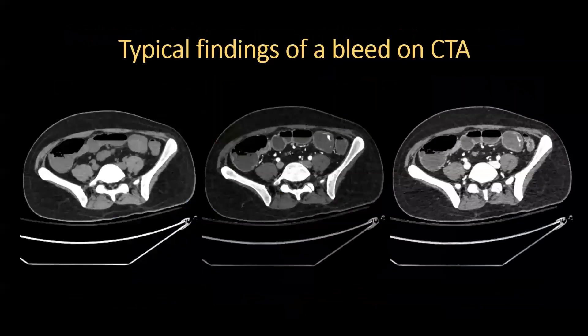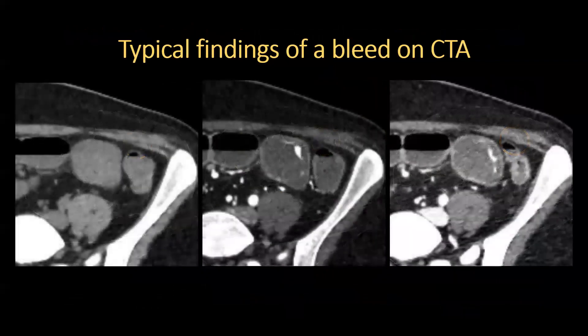Now we'll go into some case examples. Typical findings of an active bleed on CTA are an arterial blush of contrast, absent on non-contrast images, that pools and changes shape on the delayed phase. This seems straightforward, but as we will see in subsequent case examples, evaluation for a bleed can be quite complicated.